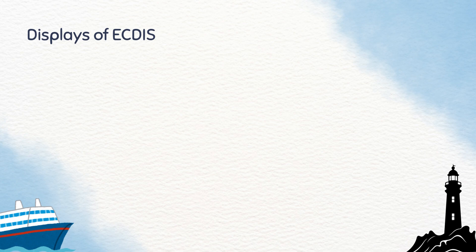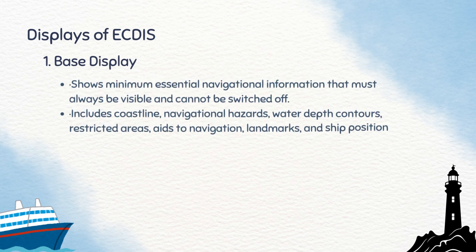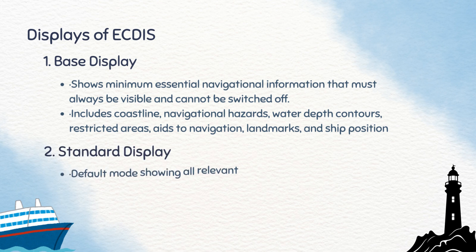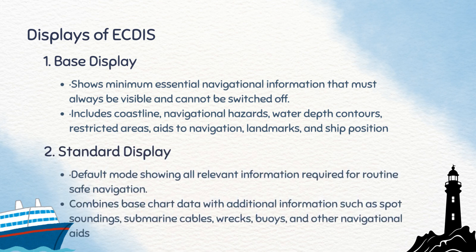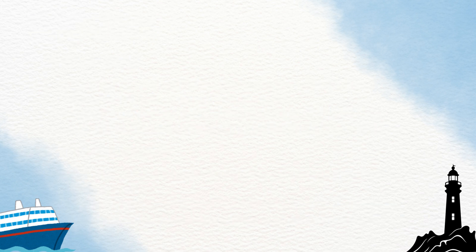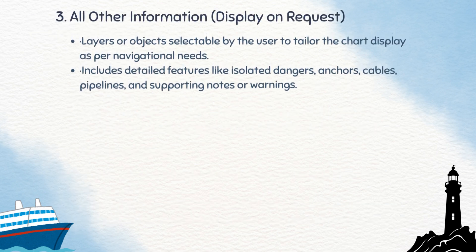ECDIS display modes — there are three levels. The first is the Base Display, showing essential information that cannot be turned off: coastline, hazards, depth contours, restricted areas, aids to navigation, landmarks, and the ship's position. The second is the Standard Display, the default for routine safe navigation, which adds details like soundings, submarine cables, wrecks, buoys, and other navigational aids. The third is Display on Request — optional layers that can be enabled when needed, such as isolated dangers, anchorages, cables, pipelines, and other supporting notes.